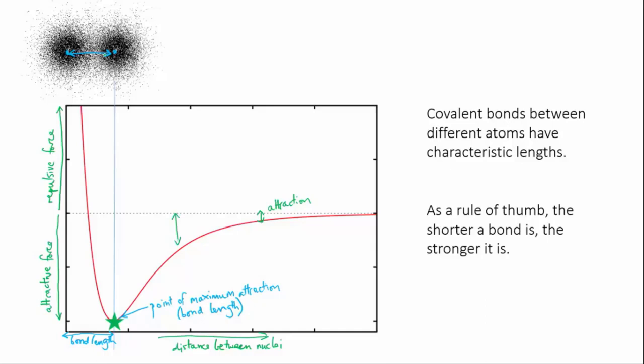Double and triple bonds are shorter than single bonds because there are more electrons involved, and so a greater level of electrostatic attraction.